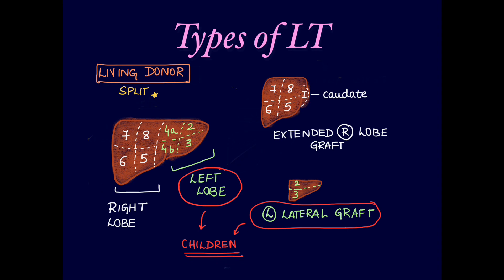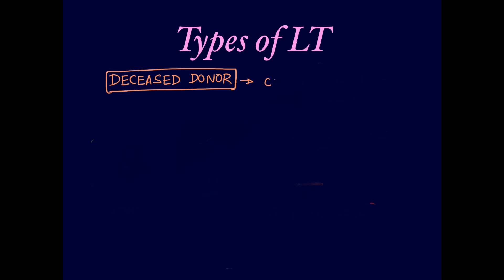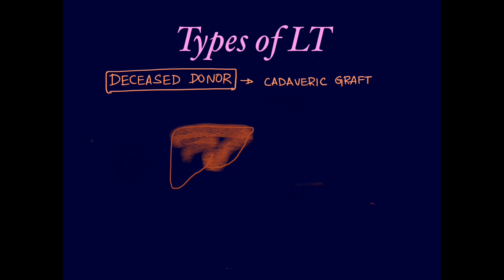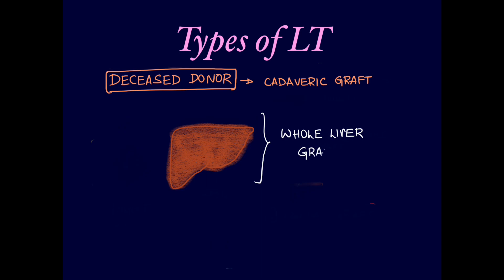That covers the living donor. In cases of a deceased donor or brain-dead patient, the liver to be harvested is also known as a cadaveric graft. With a cadaveric graft, the whole liver can be used or a split graft can also be performed.